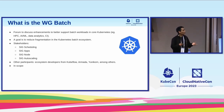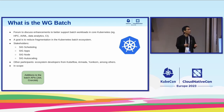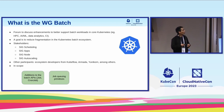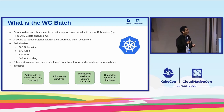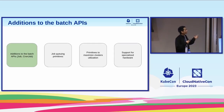So what's in scope? We'll cover additions to the job API — the Kubernetes project has had the job API for a while but it needed some love, so we brought new features to the job and cron job. We'll also talk about job queuing and maximizing cluster utilization, and discuss topics around specialized hardware: GPUs, DPUs, and more. We'll start with the job API.